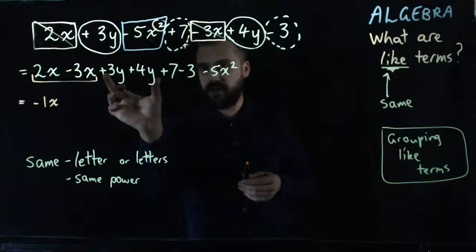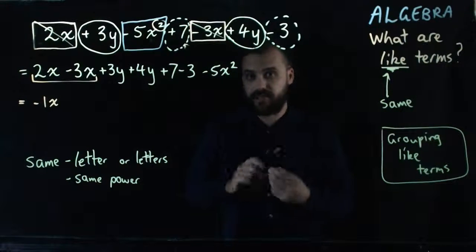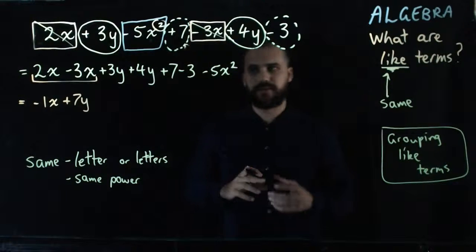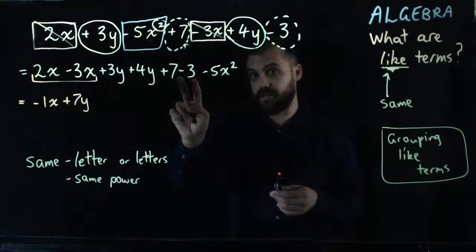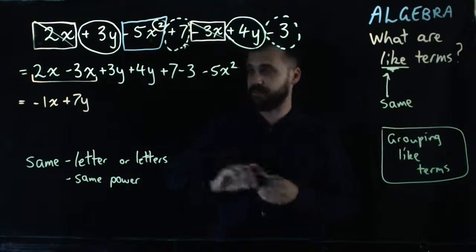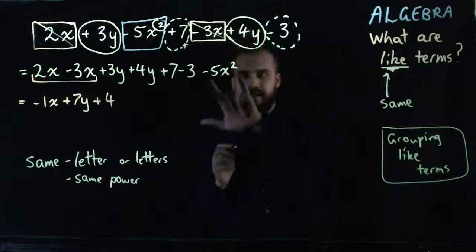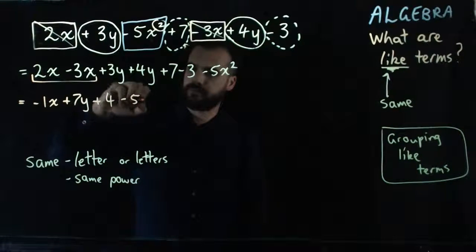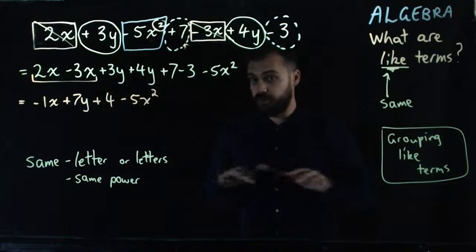Plus 3y plus 4y. So, plus 3 plus 4. That's plus 7y. Plus 7 minus 3. Plus 7 minus 3. That's plus 4. And then this guy can't be grouped, so it sits on the end. That's all we can do.